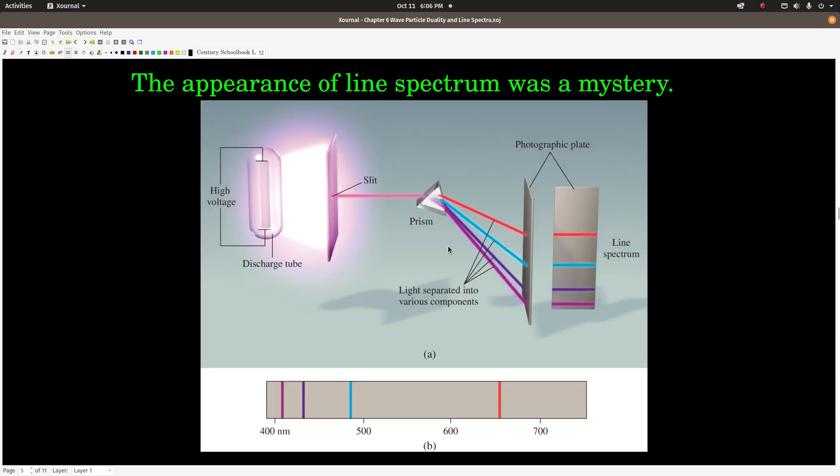So the next phenomena that led to our current understanding of quantum mechanics was line spectra. Now, this is another of those phenomena that scientists were trying to explain back then and they couldn't, and their attempts to explain it led to our current understanding of quantum mechanics. So what happens in a line spectra is if you have what's called a gas discharge tube, and this is just simply a glass tube that's sealed and evacuated, so there's no air in there, and then it's filled with one particular gas. It could be any gas, hydrogen, sodium, neon, xenon, what have you.